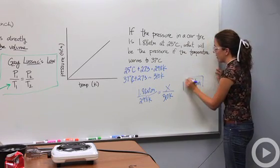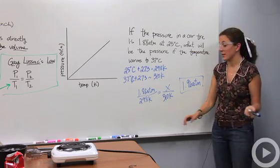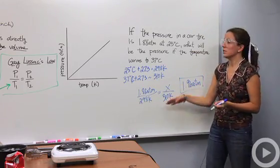So the pressure inside the tire is actually going to increase as expected because temperature also increased. So this is an example of Gay-Lussac's Law in an everyday application.